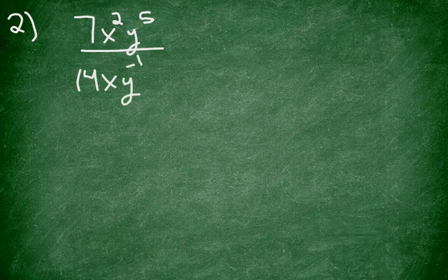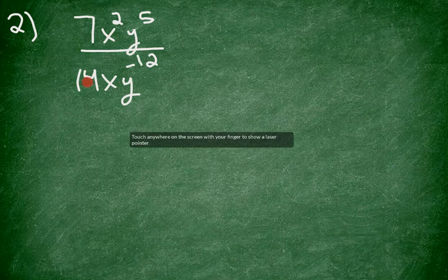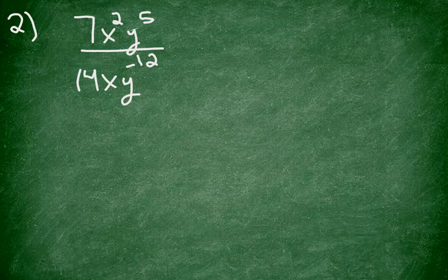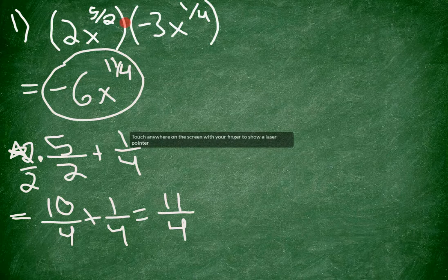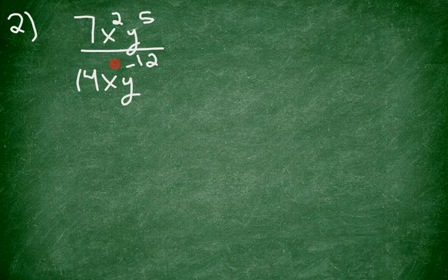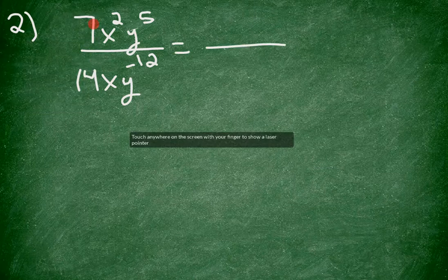For number two, we're going to talk about division. The last problem we talked about multiplication, so it makes sense to talk about a division problem. We got a lot going on here. First of all, we have division. We have like bases of x that we're dividing, and like bases of y's we're dividing. In the previous problem, multiplication of like bases means we add the exponents. So you can probably guess that for division, I'm going to subtract the exponents of like bases.